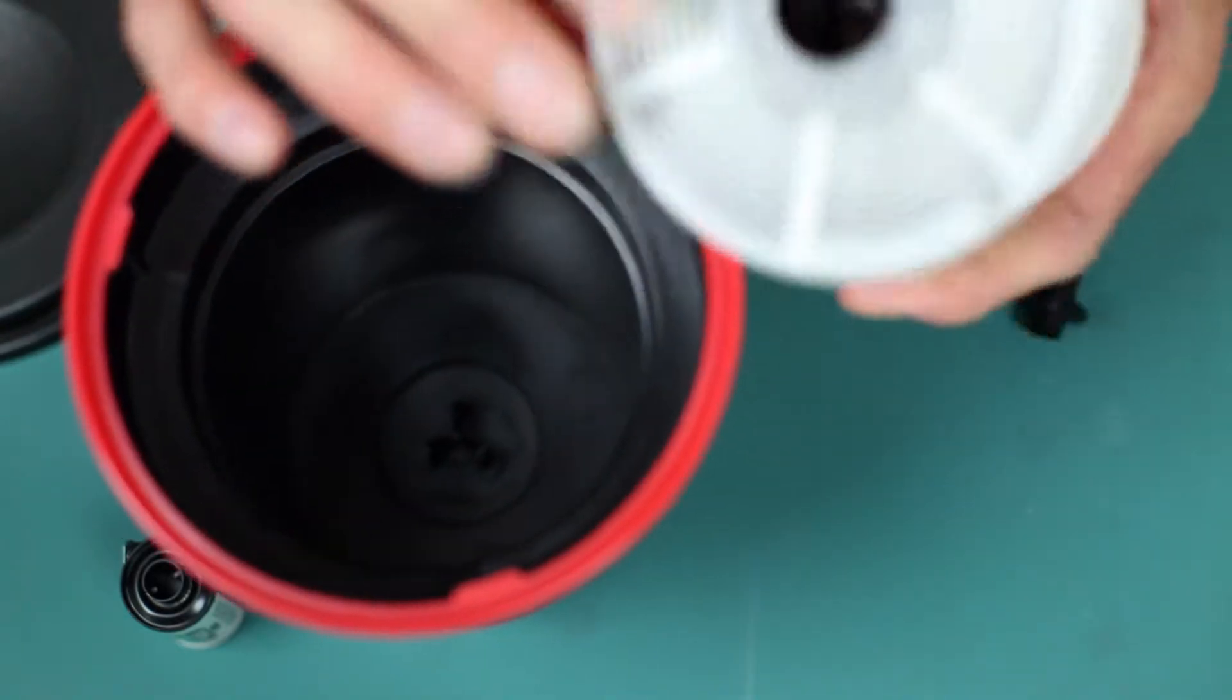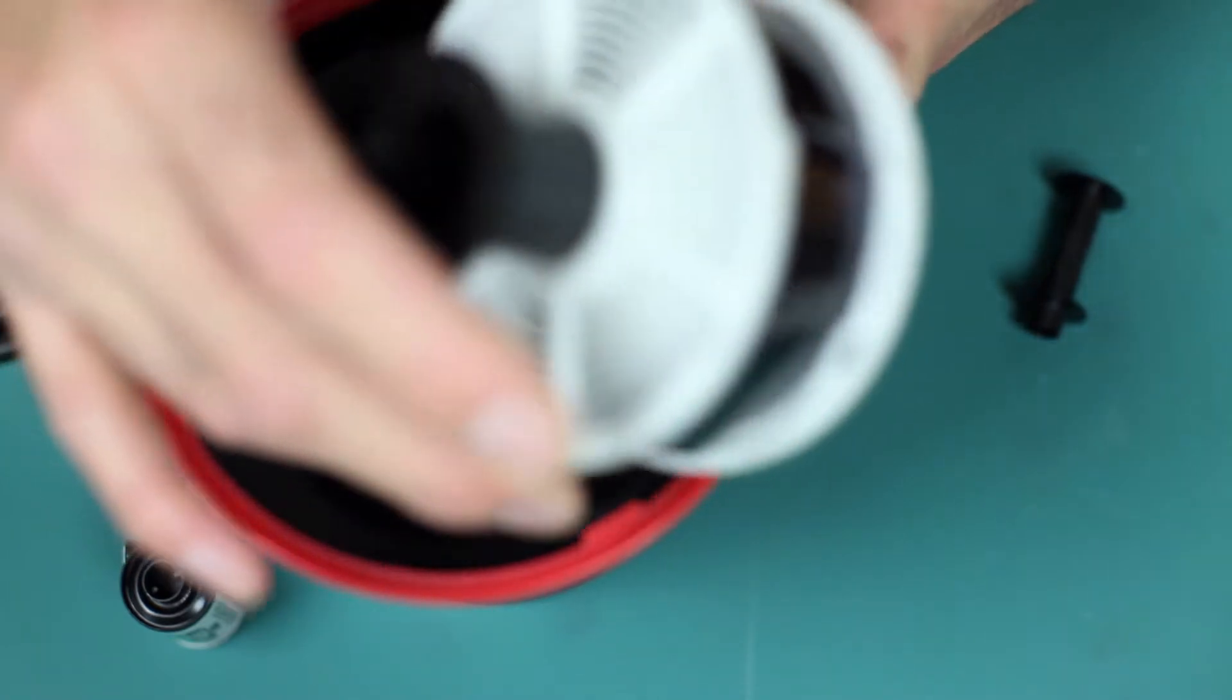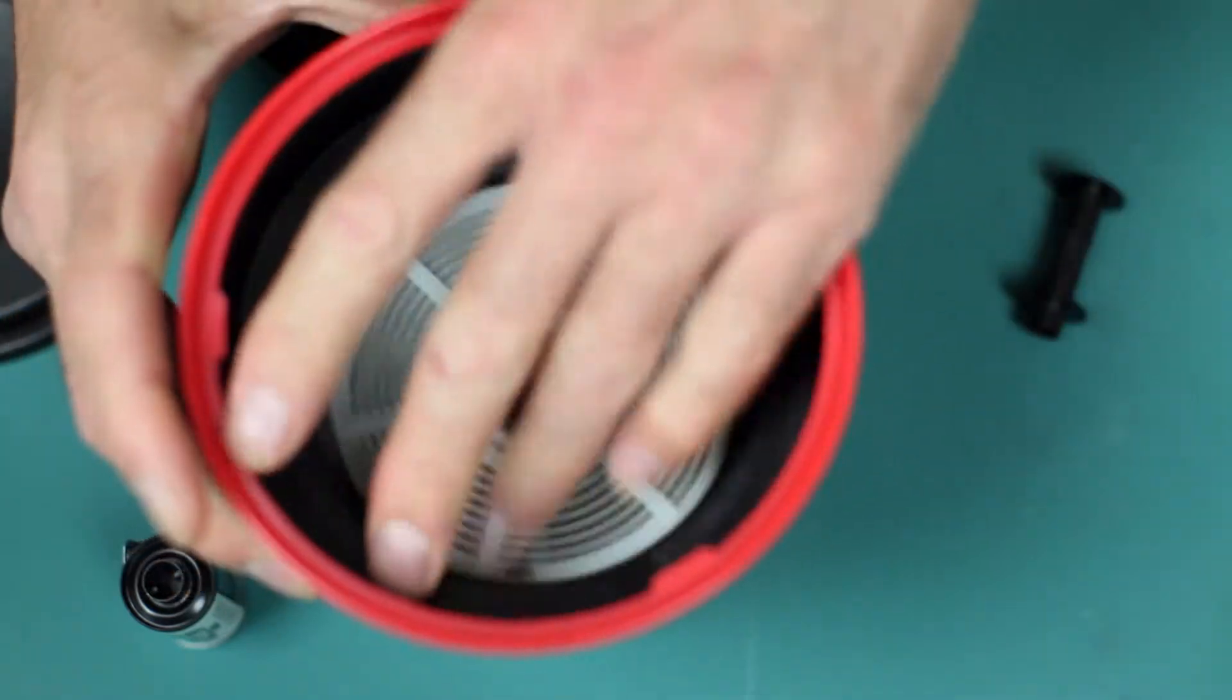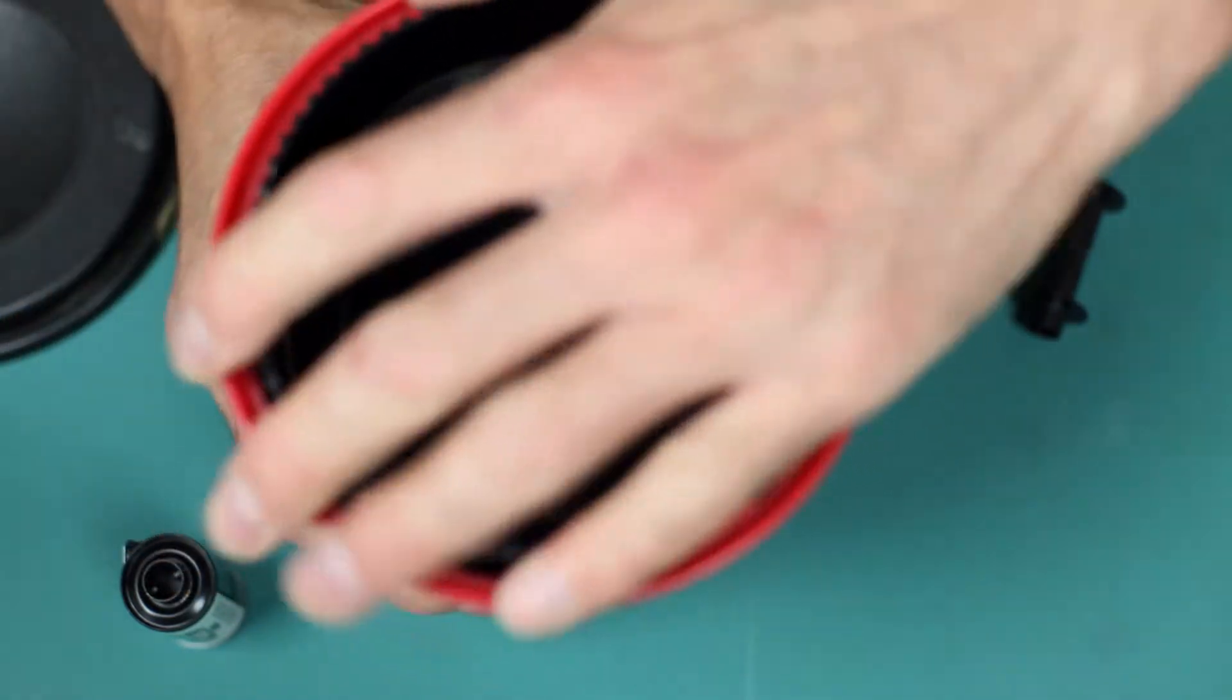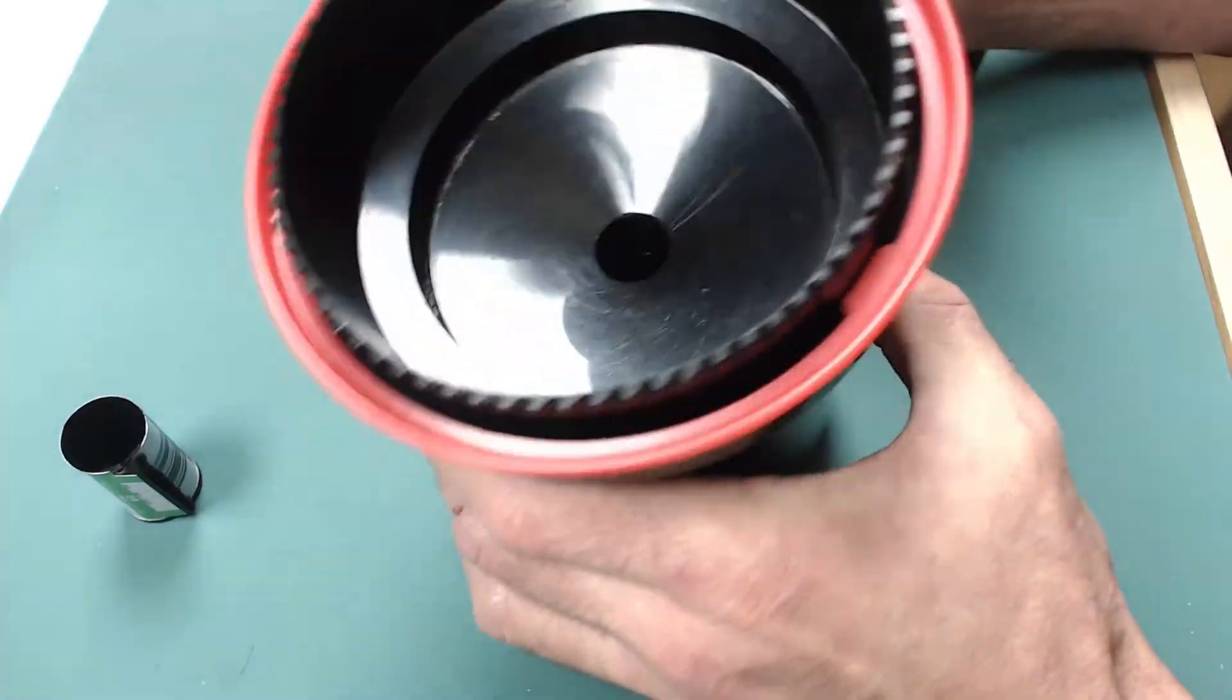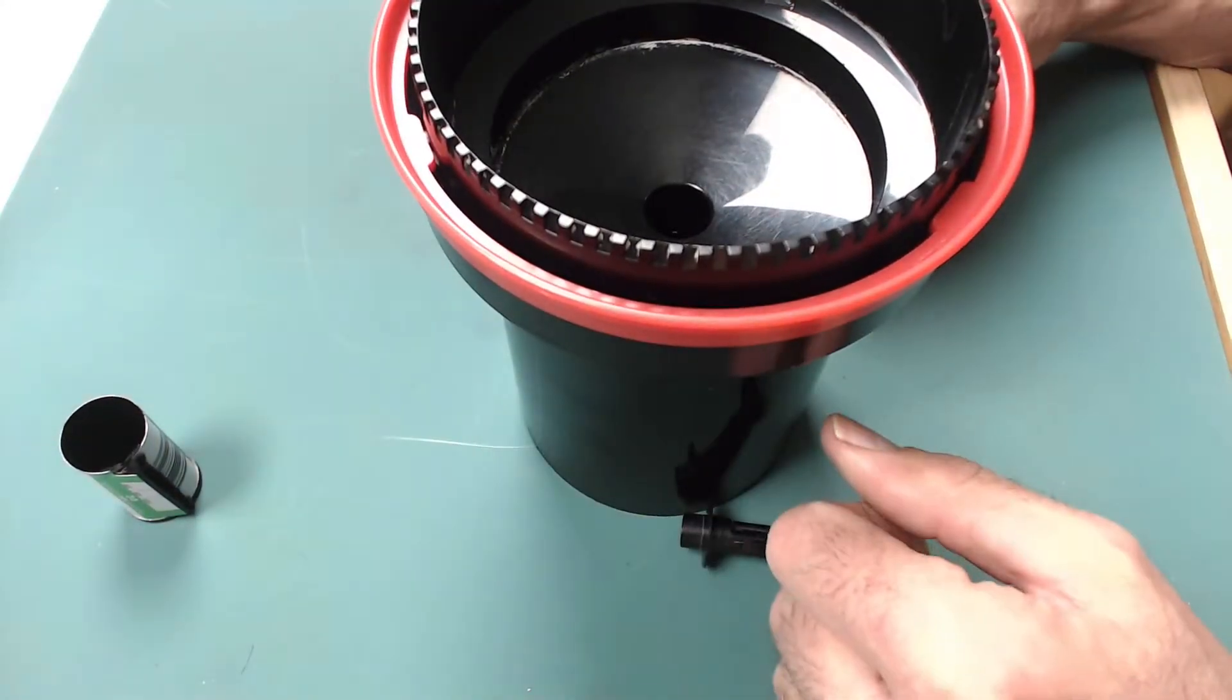Then the spiral goes into the tank. I put a second spiral on top to stop this one moving when I'm agitating the chemicals. Those go in, the funnel goes on, and now once that's locked, it is light tight. It can be taken out of the changing bag ready for the chemicals.